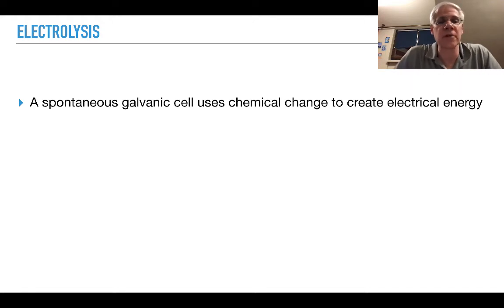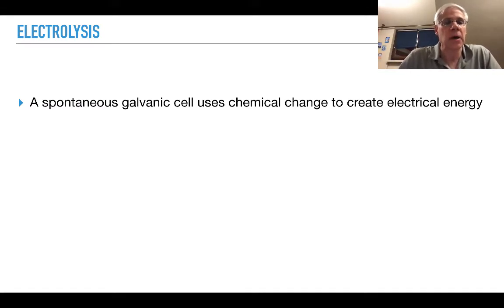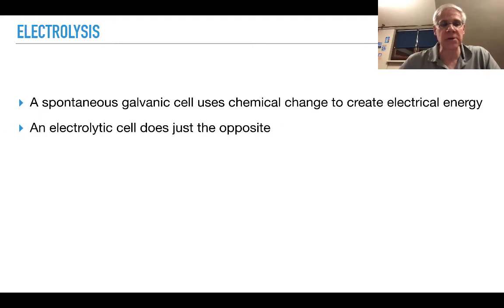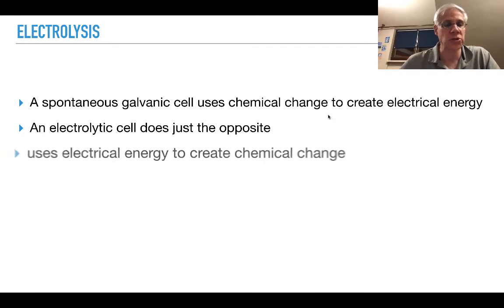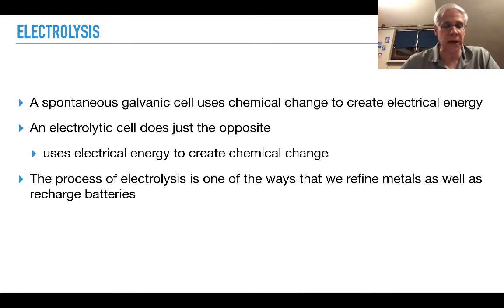The last bit of electrochemistry we want to talk about is electrolysis, or an electrolytic cell. We've looked at galvanic cells or voltaic cells — same thing. When we have a galvanic cell, we use a chemical change to create electrical energy. An electrolytic cell does just the opposite: we use electrical energy to create a chemical change. In essence, what we have here is a rechargeable battery.